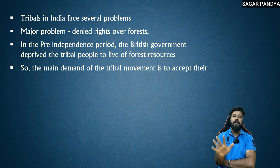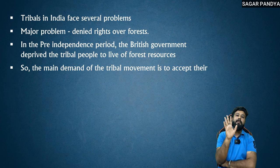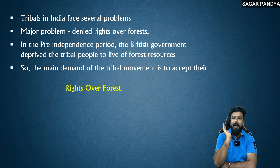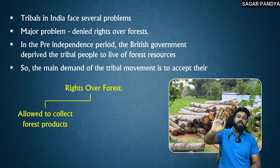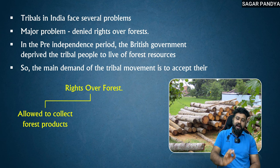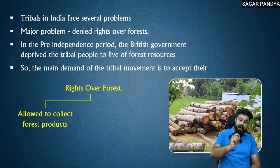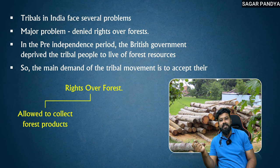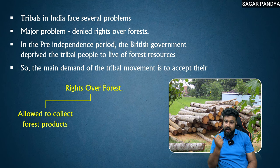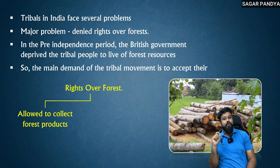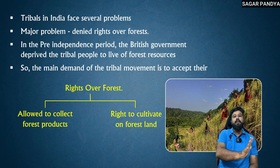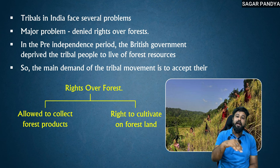The British government at that time banned them — told them that you cannot do these things. They were told that you cannot live on forest resources. So the main demand of the tribal movement is to accept and give them rights over the forest. Right over forest means — whatever forest produce there is, like wood, sandalwood, rubber, leaves, fruits, flowers — by selling all of this they earn money and their household runs. So the right to allowed forest produce and right to cultivate on forest land was demanded.